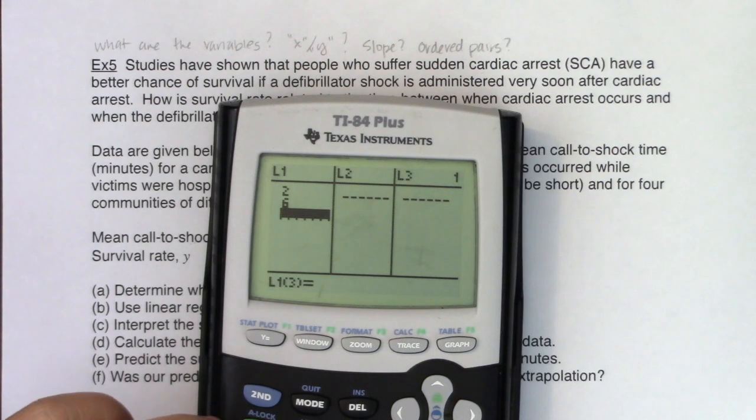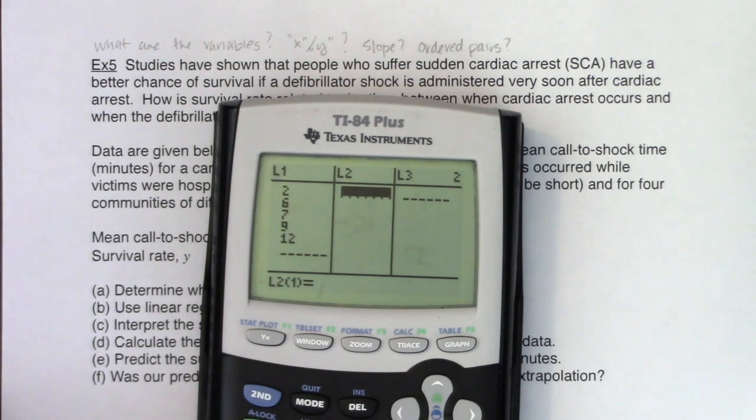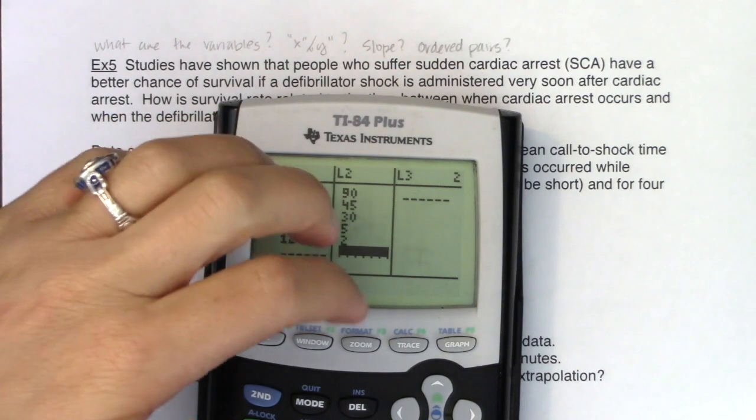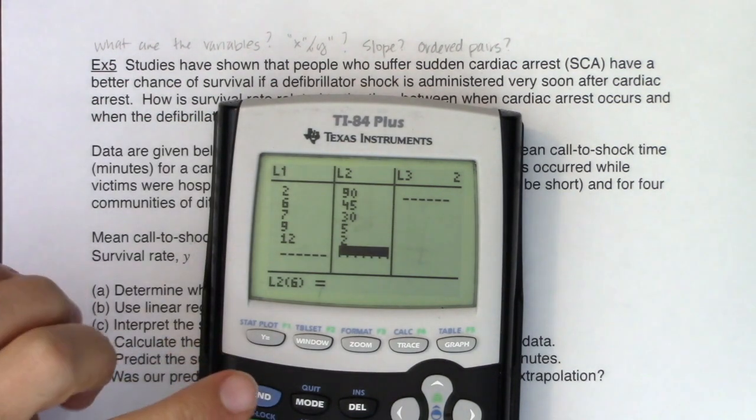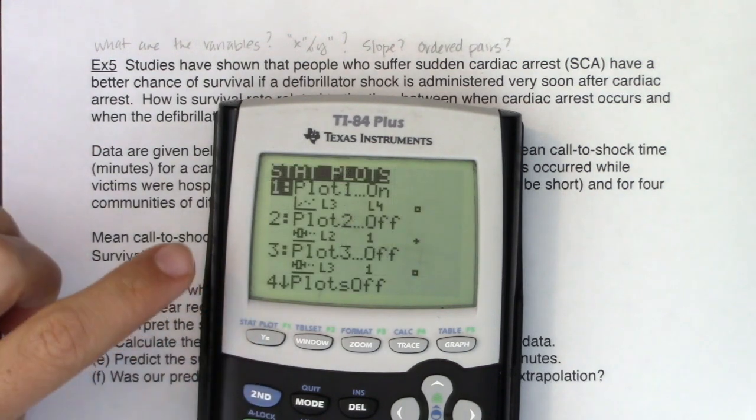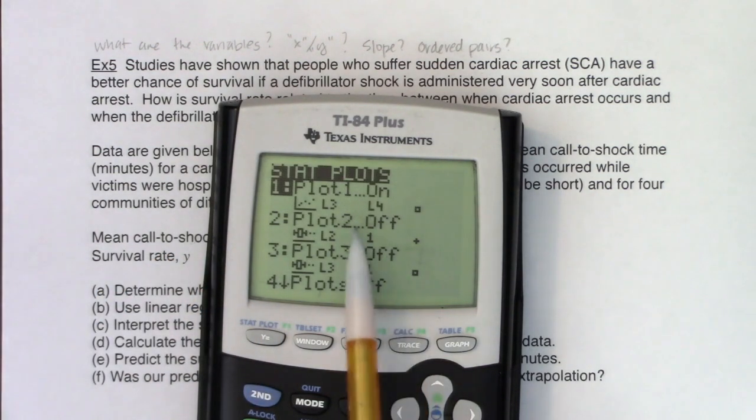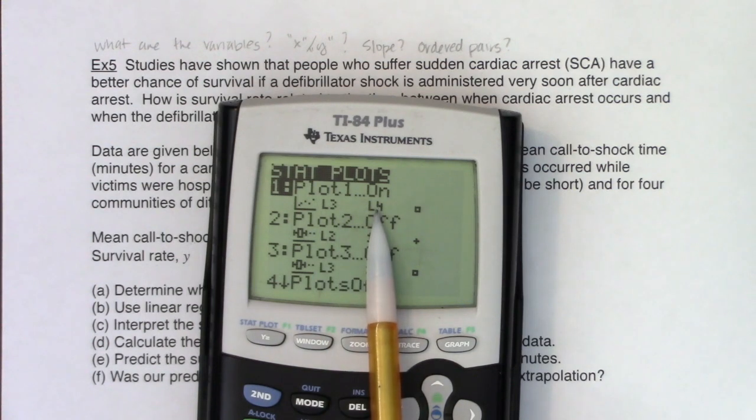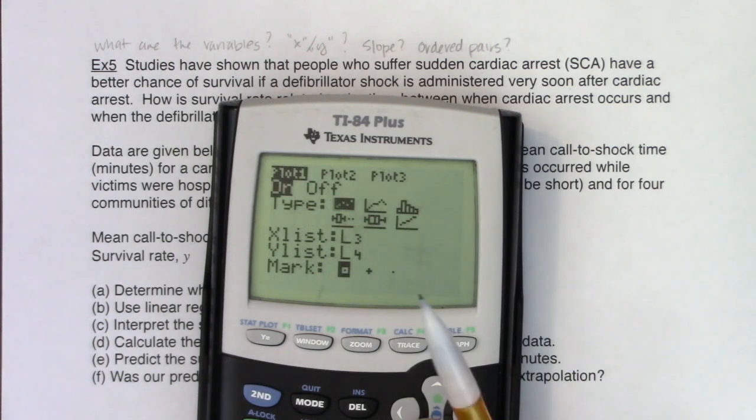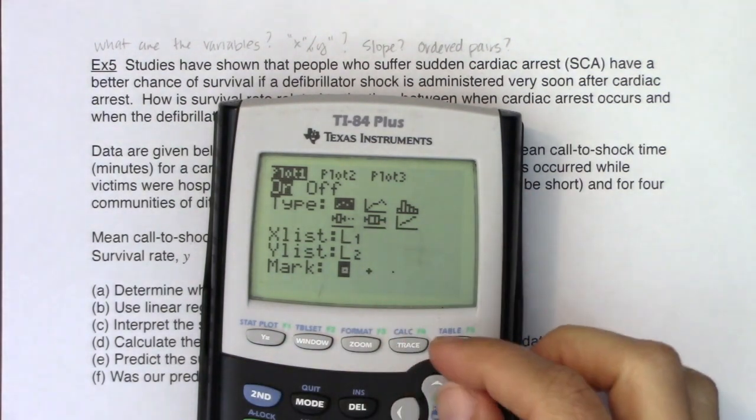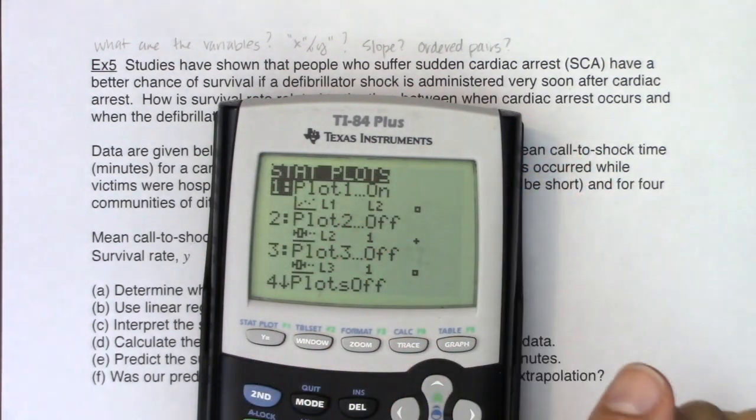So I have data two minutes, six minutes, seven, nine, and 12 minutes. And then I have my survival rates that are decreasing. So I have data in L1 and L2. The first thing you always want to do, data entry. The next thing you want to do is set up your stat plots. And you probably have your stat plots set up from before. I need to adjust them a bit because I was doing that base year stuff in the last example. So I need to switch these back to L1 and L2.